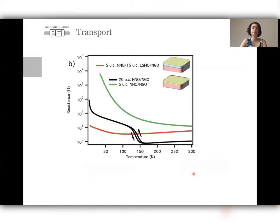I start with the basic characterization, which is transport. First for a thick film of NNO, 20 unit cells on NGO, and we see here clearly the metal-insulator transition is supposed to be with the hysteresis. And it happens around 150 Kelvin, or just below 150, because the thin film in the bulk is about 200 Kelvin. We compare that with a thin film of five unit cells of NNO directly on the substrate NGO, and we see this very thin film is always insulating.